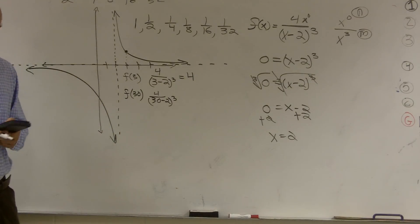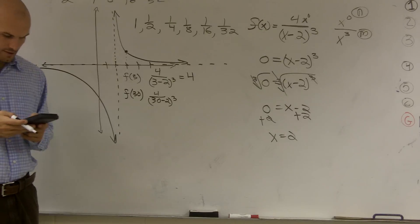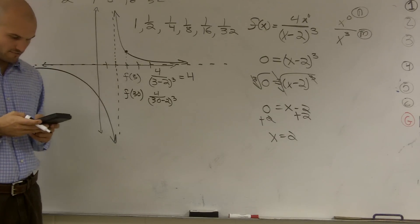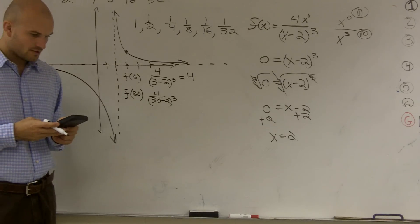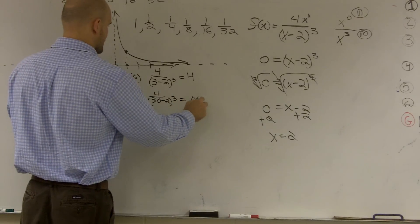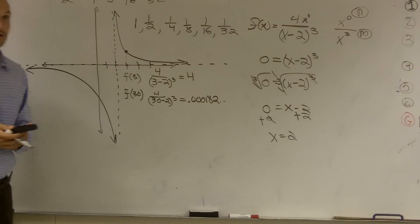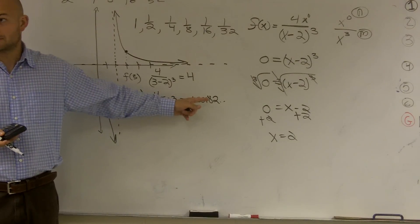So I'm going to have to use my calculator for this one. So 28 cubed, so four divided by 28 cubed gives me 0.000182 dot dot dot. So that's a pretty small number. Pretty small.